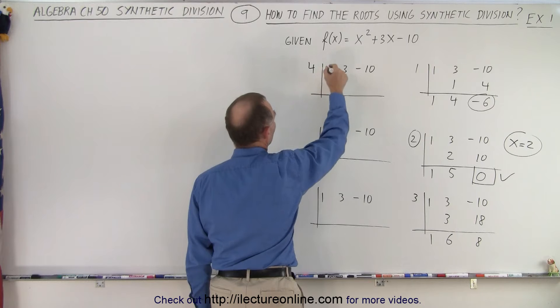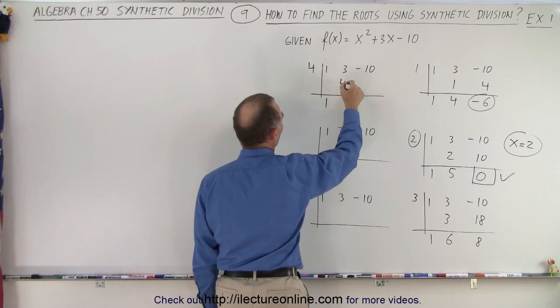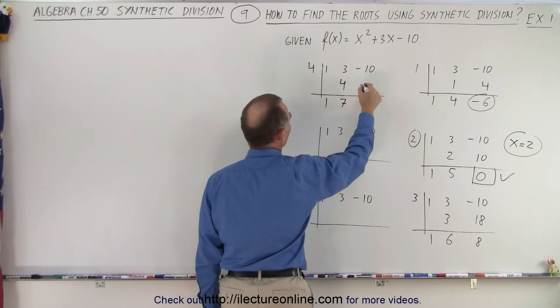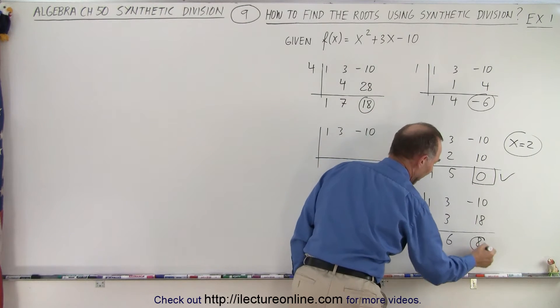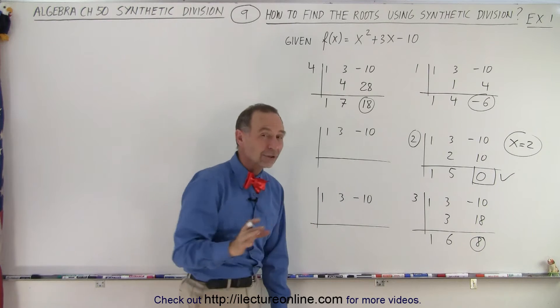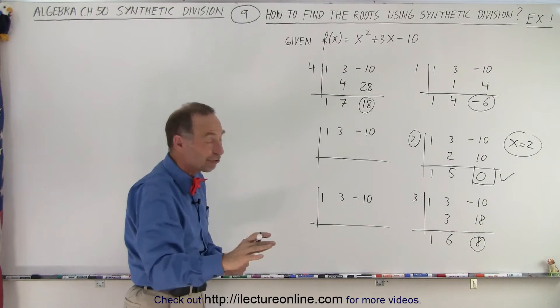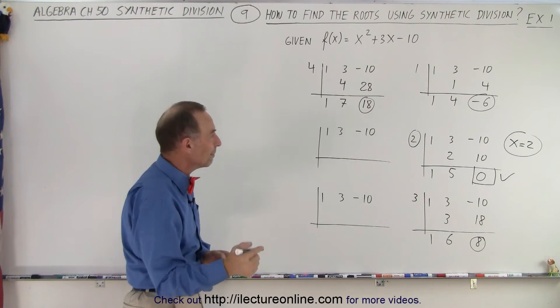Well, let's try the number 4. Drop down the 1. 4 times 1 is 4. Add them together, I get 7. 4 times 7 is 28. Add them together, I get 18. So notice I went from 0 to 8 to 18. That's not a good sign. I'm getting away from 0 and pretty quickly. Maybe I need to go in the other direction.